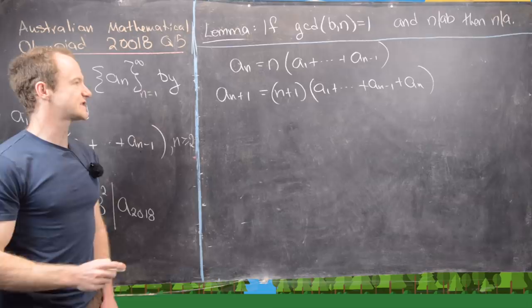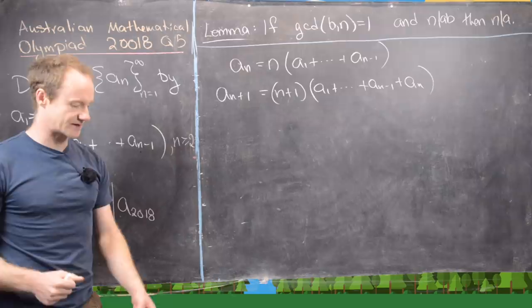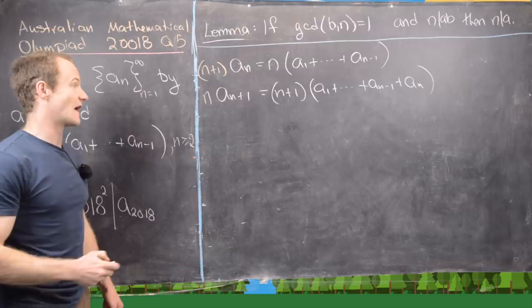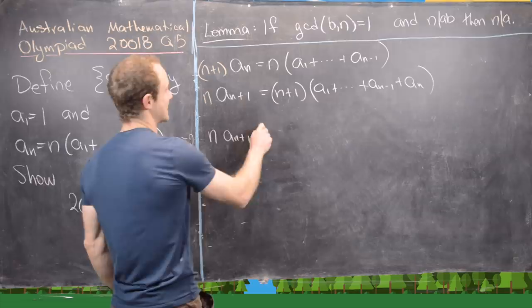But now notice if we multiply this one by n and this one by n plus 1 they will have a ton of like terms. So that's exactly what we're going to do. So we're going to go ahead and multiply this one by n and then this one by n plus 1 and notice that we have a lot of like terms. In fact that allows us to subtract off a bunch of those like terms in the following way.